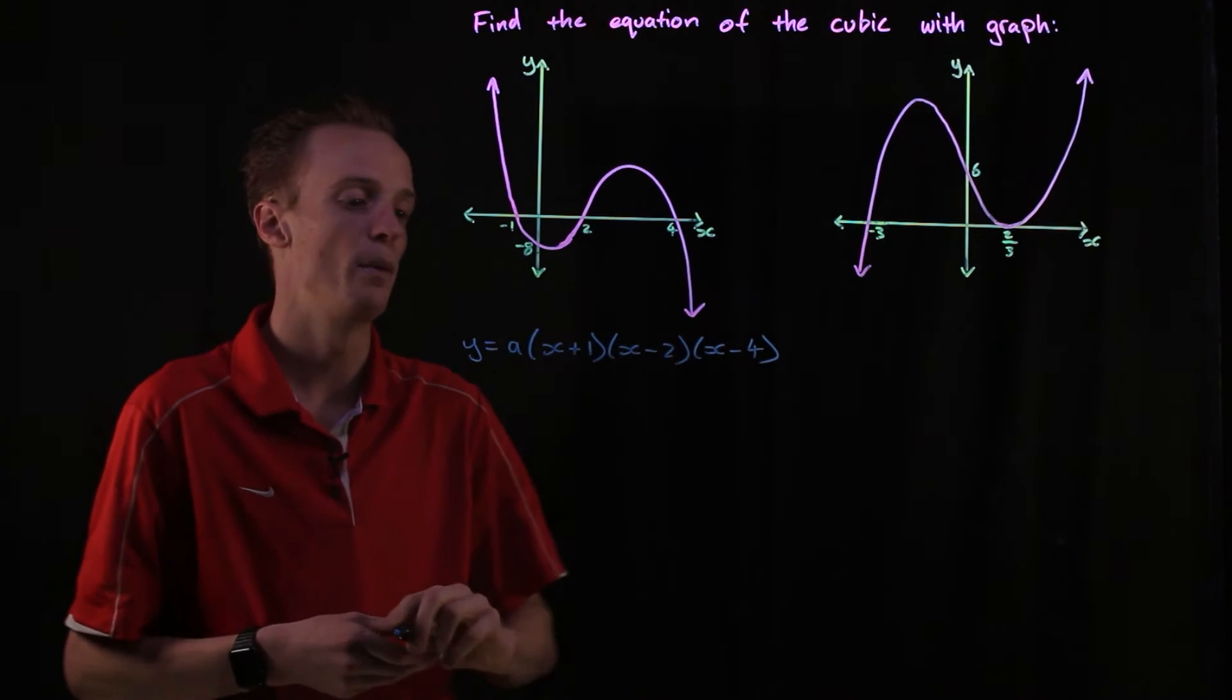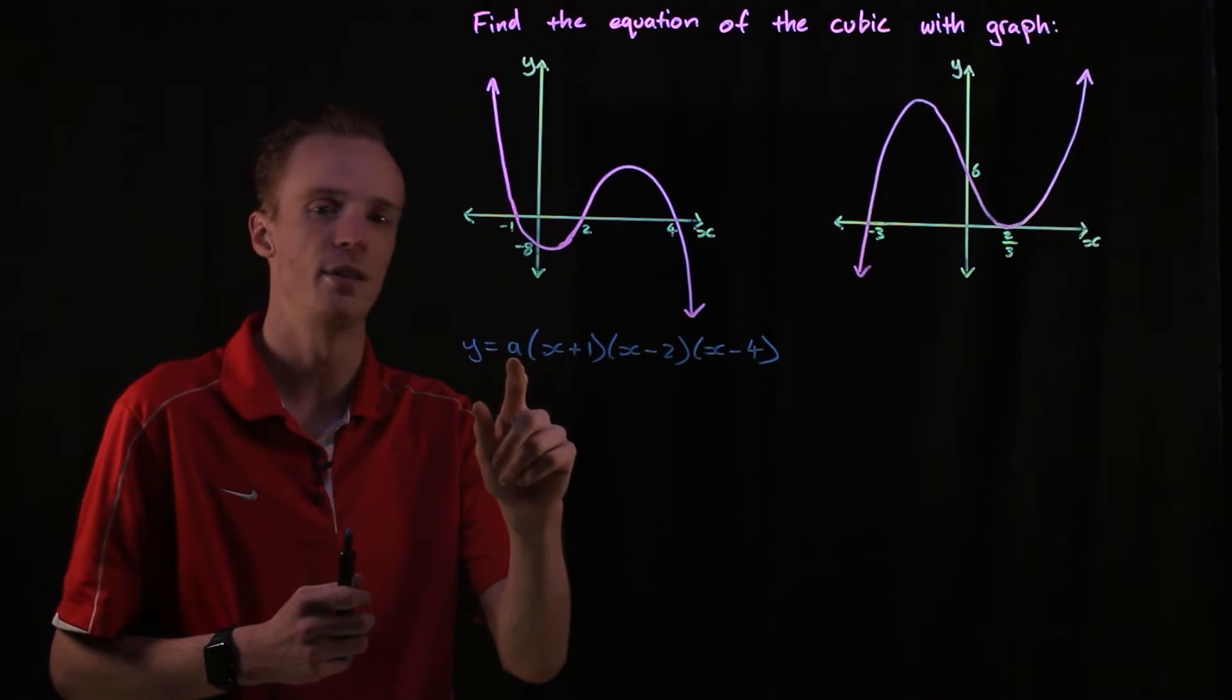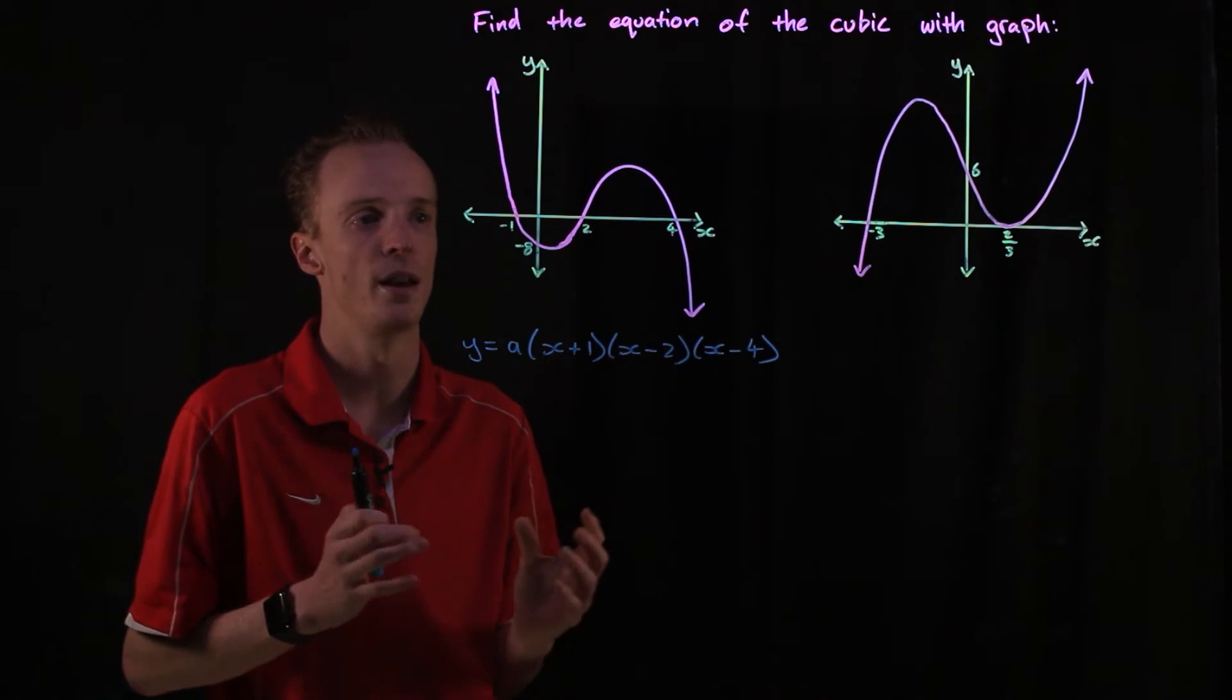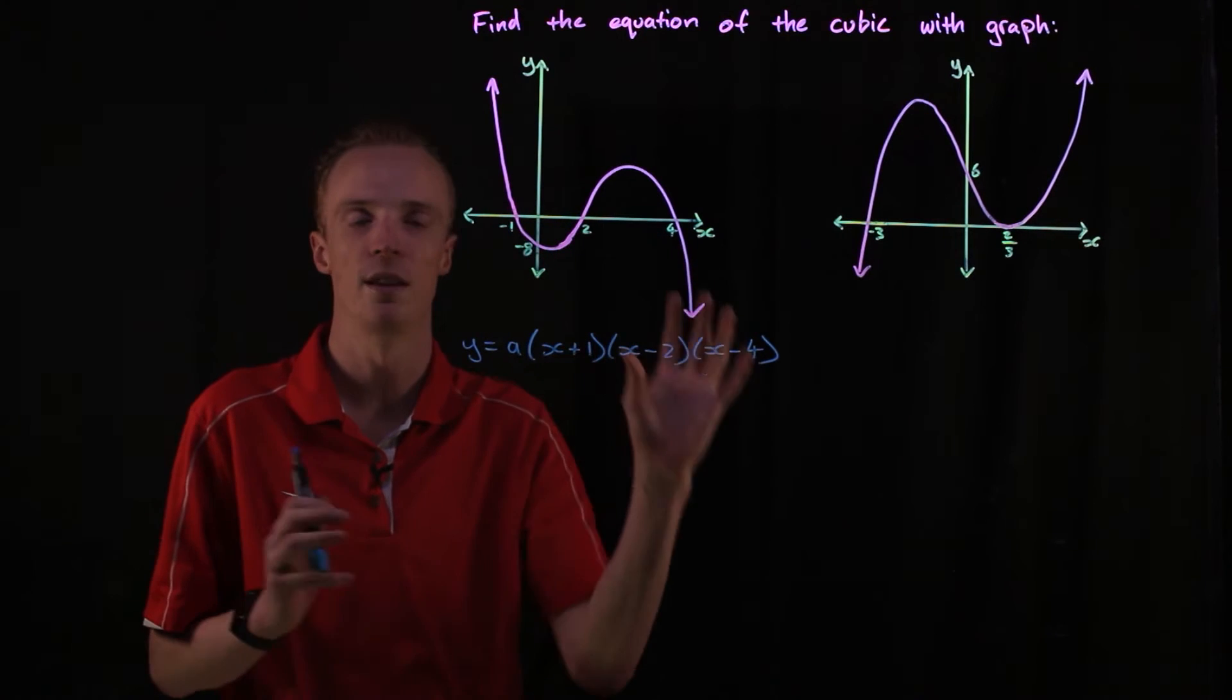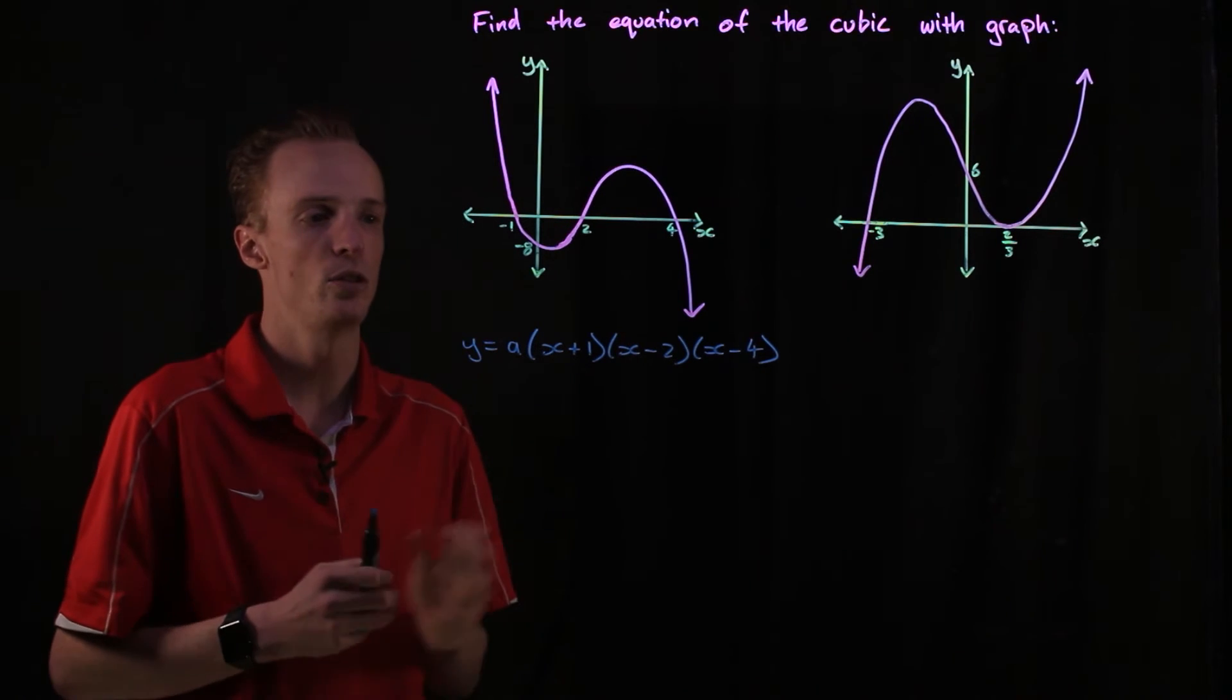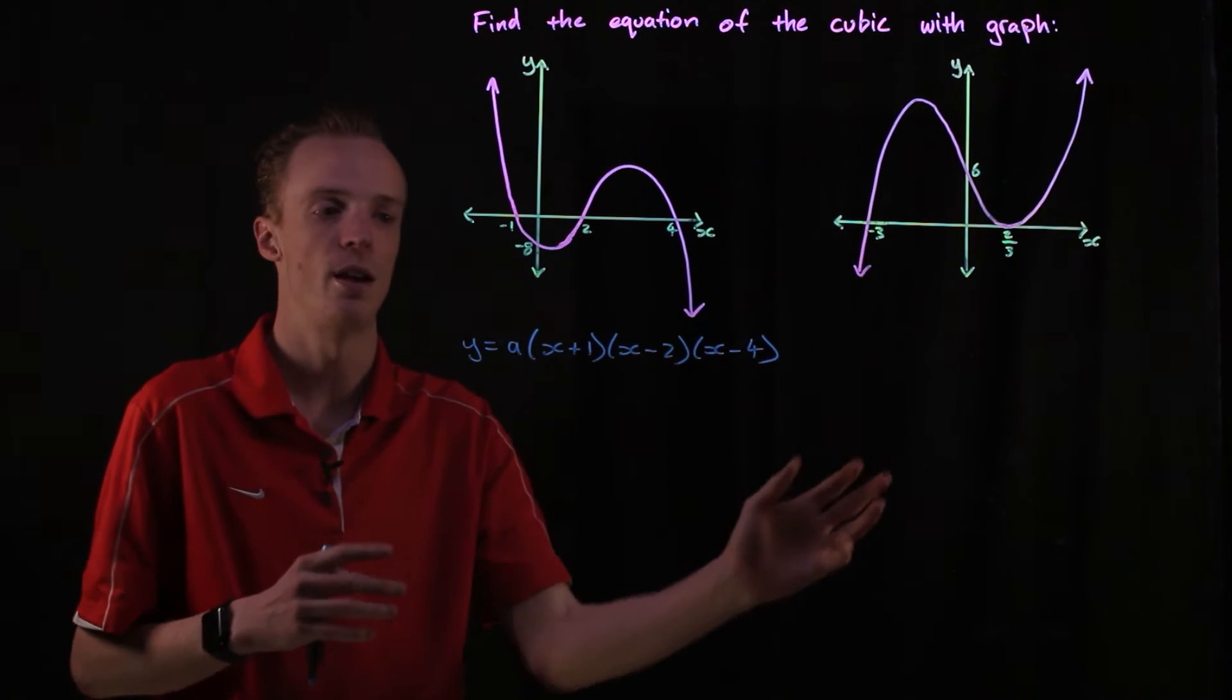Keep in mind that when we're putting them back in here we need to change the signs. But the thing is, we need to determine the value of this a here because we haven't defined this exact polynomial yet. What we've defined is just a cubic of some kind that cuts through at these points. So to define this exact cubic we need to substitute another point in, other than the x-intercepts that we've used so far.